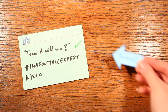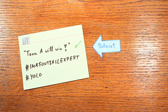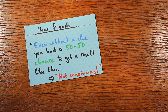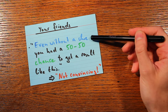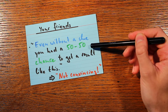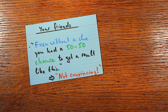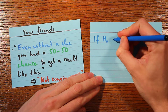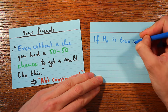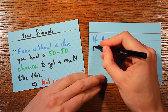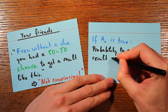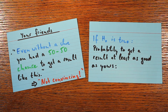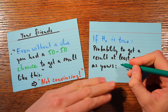You made your prediction and it turned out to be right — this is what a statistician would call the data set. In this case it's only one data point because you only made one prediction, but it's still all the data we have. Your friend said: even if you don't have a clue what you're talking about, you still have a 50-50 chance of getting this one prediction right. The statistician would say: under the assumption that the null hypothesis is true — meaning you don't have a clue — the probability of getting a result at least as good as the one you have, namely getting this one out of one prediction right, would be 50%.